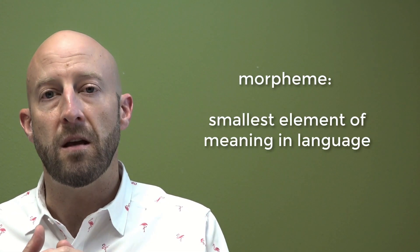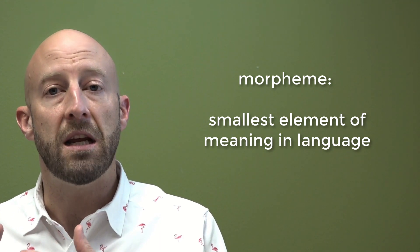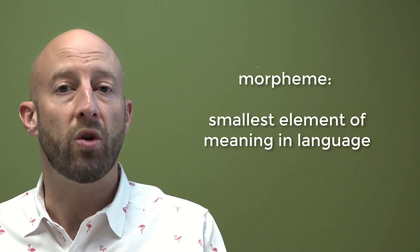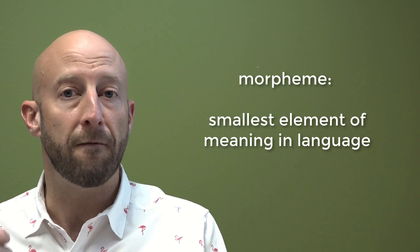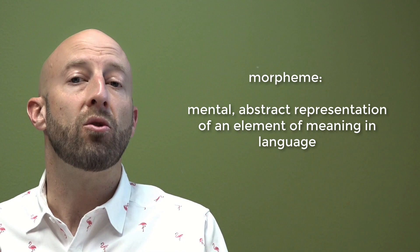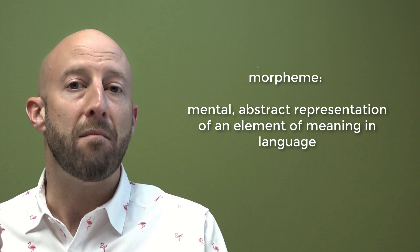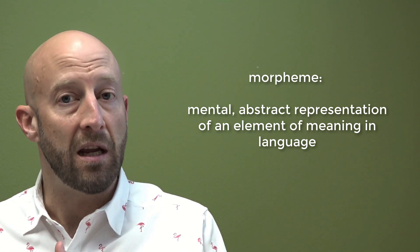So in part one of morphology, I talked about how a morpheme is the smallest element of meaning in a language. They cannot be broken down into any smaller meaningful bits, just individual sounds which in and of themselves are meaningless. So let me add to that definition by saying that a morpheme is an abstract mental representation of a minimal element of meaning.